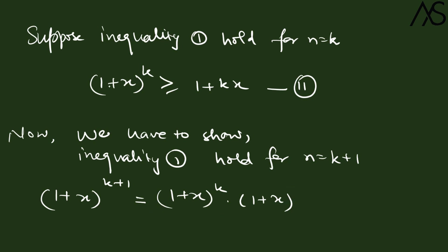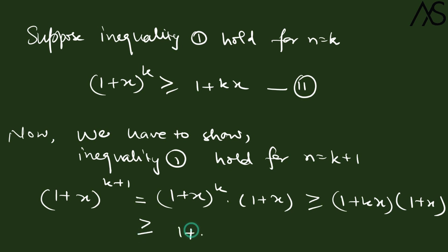Since (1 + x)^k ≥ 1 + kx by inequality 2, we can substitute: (1 + x)^(k+1) ≥ (1 + kx)(1 + x). Expanding this gives 1 + (k+1)x + k·x².